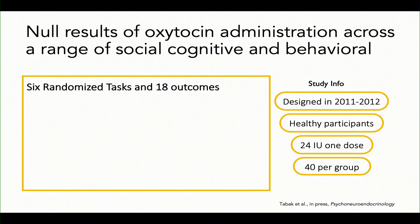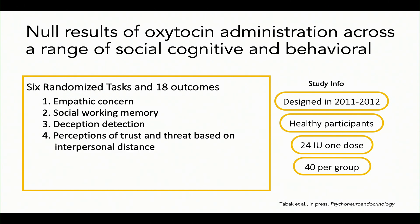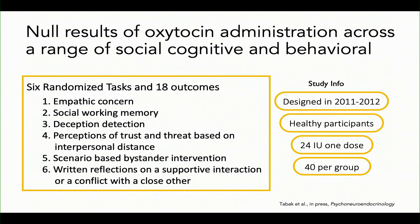There were six randomized tasks and 18 total outcomes. We had a task measuring empathic concern following an empathy induction, another looking at social and non-social working memory, a task involving deception, assessments of perceptions of trust and threat based on perceived interpersonal distance, scenario-based bystander intervention, and a writing task where people reflected on recent experiences providing support to others or being in conflict with somebody.